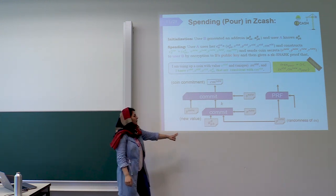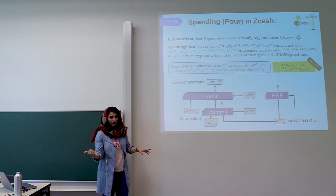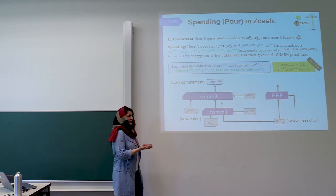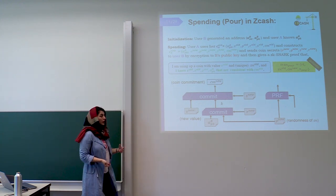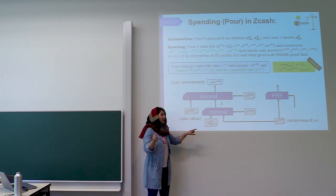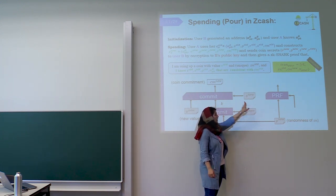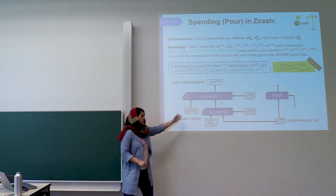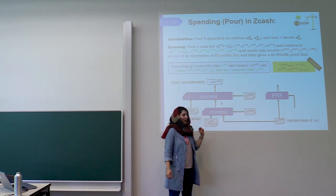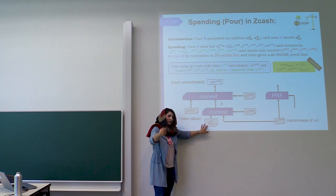User B, the receiver, picks a secret key, runs the pseudorandom function, creates a public key, and makes it public. Then user A, the sender, picks her public key and the randomnesses R_new, S_new, and V_new — which is the desired value of the coin to be spent. She creates the commitment of the coin for the receiver's public key.